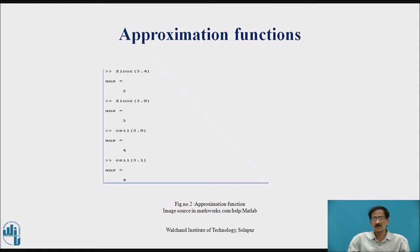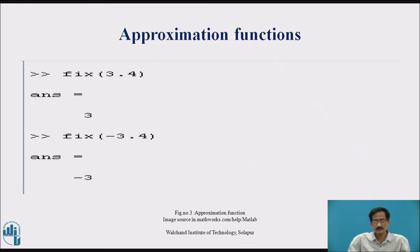Here are some examples: floor 3.4 will be 3, floor 3.9 will be 3, ceil 3.9 will be 4, ceil 3.1 will be 4, fix 3.4 will give 3, fix minus 3.4 will give minus 3.